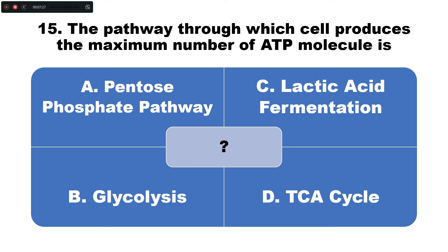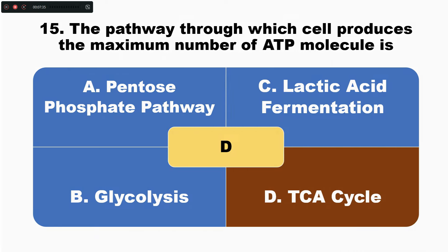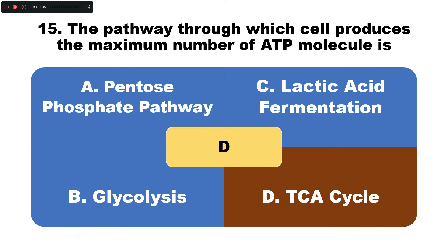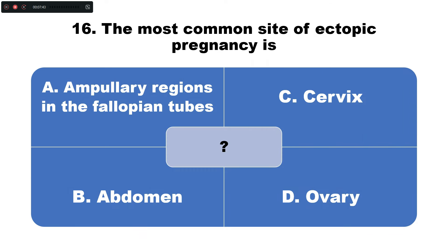Question number fifteen: The pathway through which the cell produces the maximum number of ATP molecules — option A: pentose phosphate pathway, B: glycolysis, C: lactic acid fermentation, D: TCA cycle. The correct answer is option D — the TCA cycle (citric acid cycle) produces the maximum number of ATP molecules.